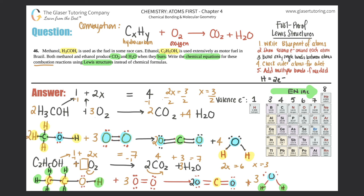Balancing chemical equations is actually covered in chapter six of the atoms first textbook, so don't worry too much if this was ahead of where you are. Focus on getting the Lewis structures down and you'll be in great shape. Thanks so much for tuning in — let me know if this helped in the comments, subscribe if you'd like, and I'll see you in the next question. Have an awesome day!